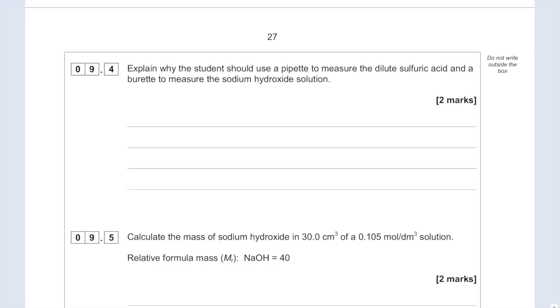Explain why the student should use a pipette to measure the dilute sulfuric acid and a burette to measure the sodium hydroxide solution. Pipettes measure a fixed volume, which is what we need. Whereas burettes measure variable volumes, which is what we need for the sodium hydroxide.